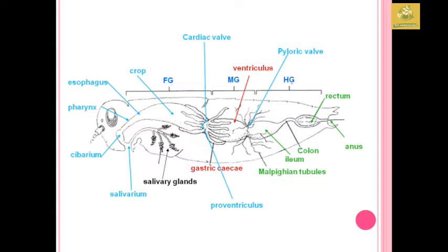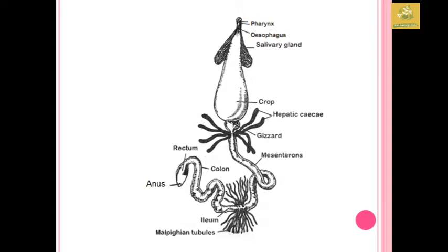I have provided a cross-sectional image of the alimentary canal present in the insect body, extending from the pharynx to the anus, which is the last part.